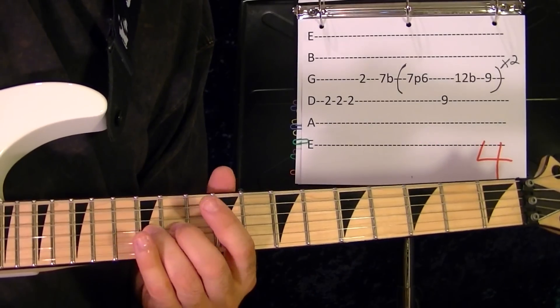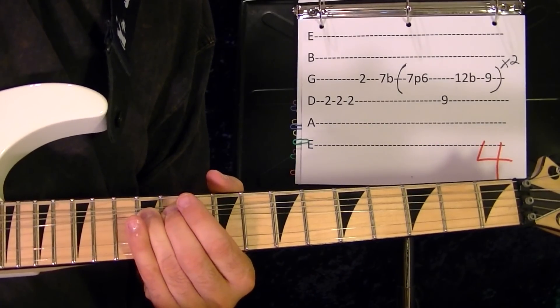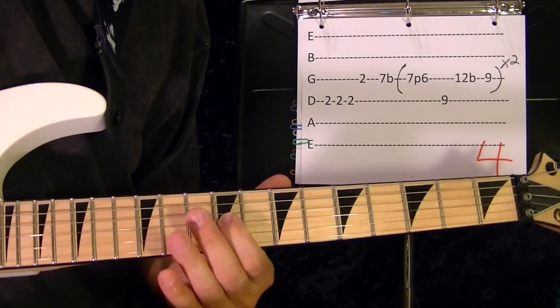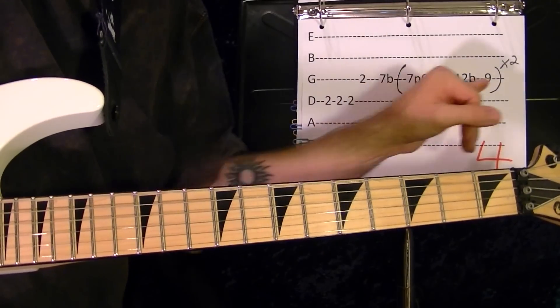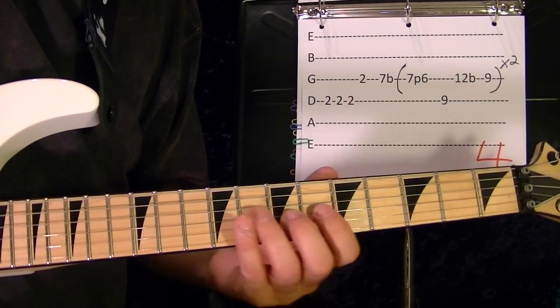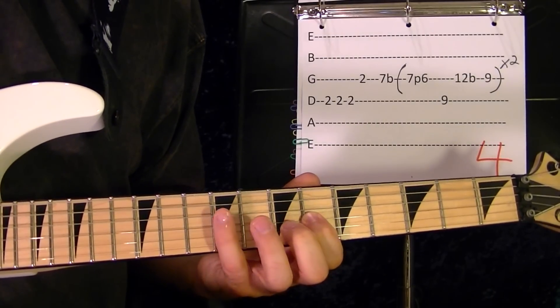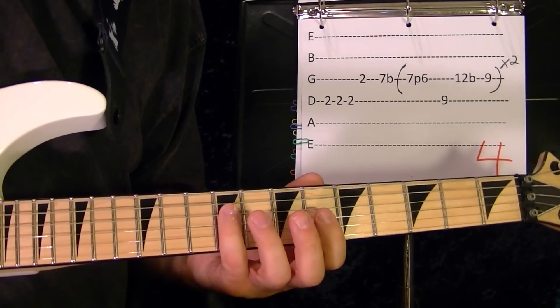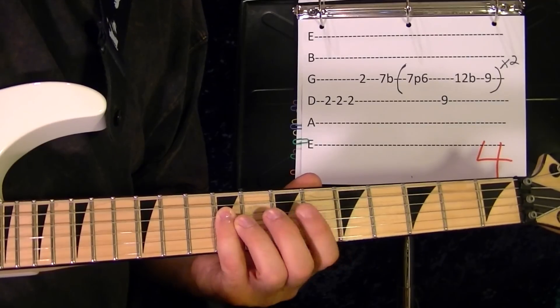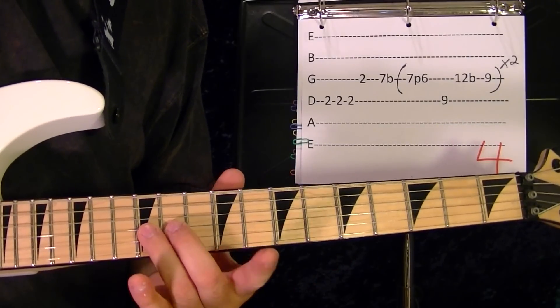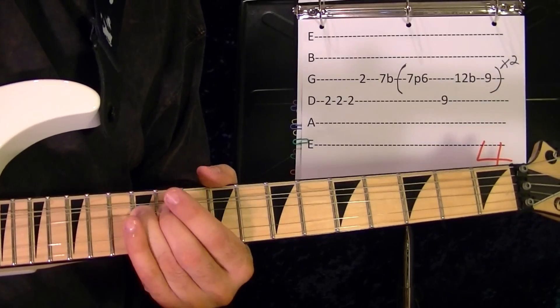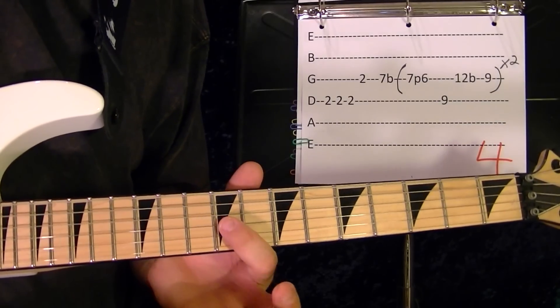Third string twelfth bend up. Then do that part again at the seventh fret, pull off to the sixth, fourth string ninth, twelfth, twelve fret bend up.